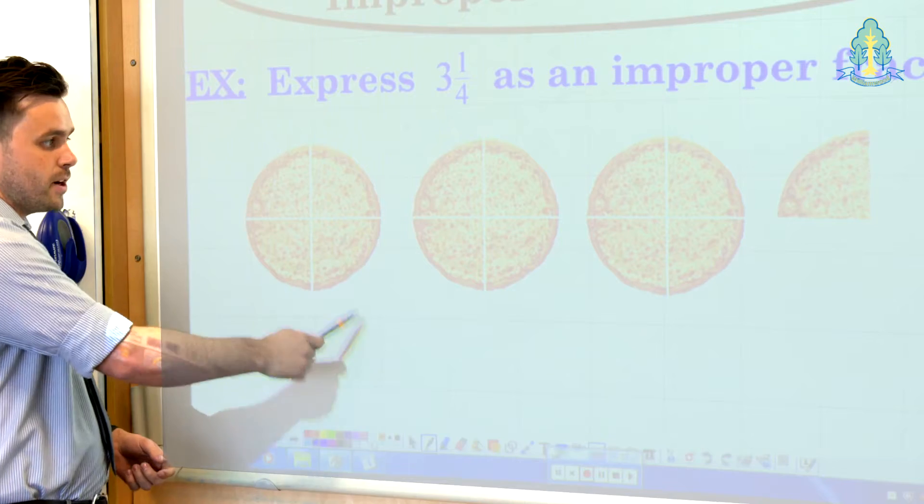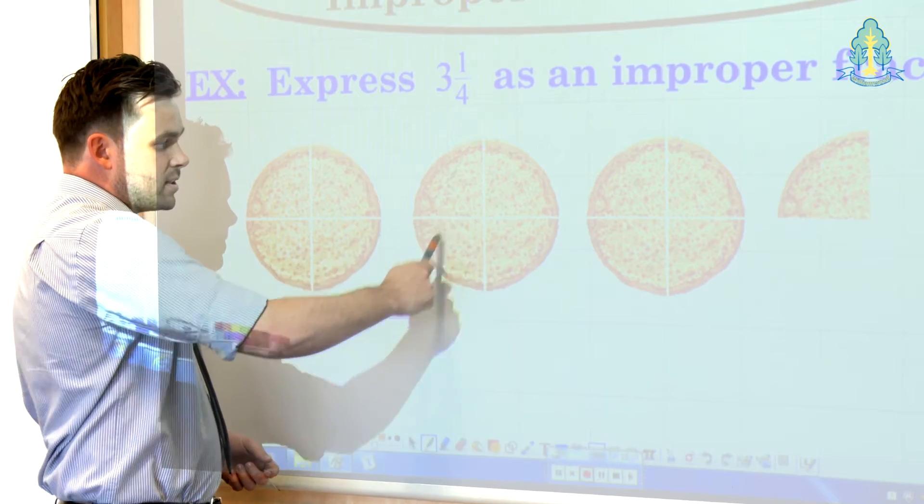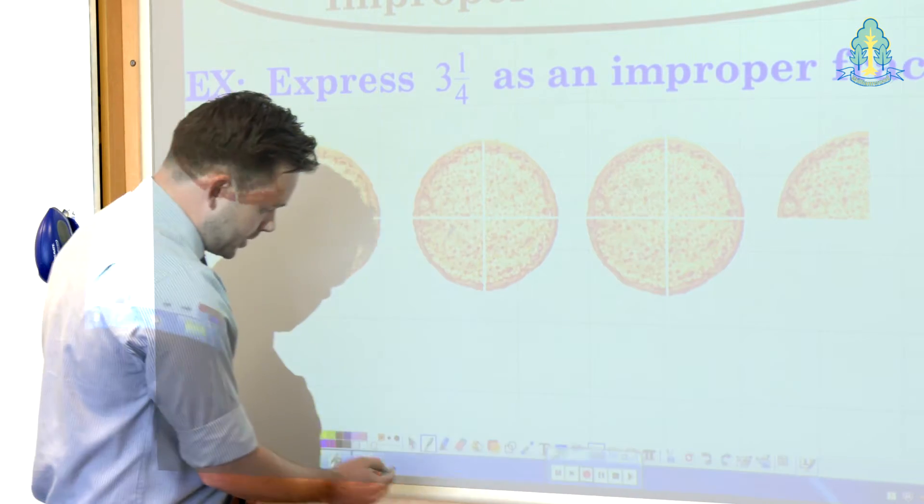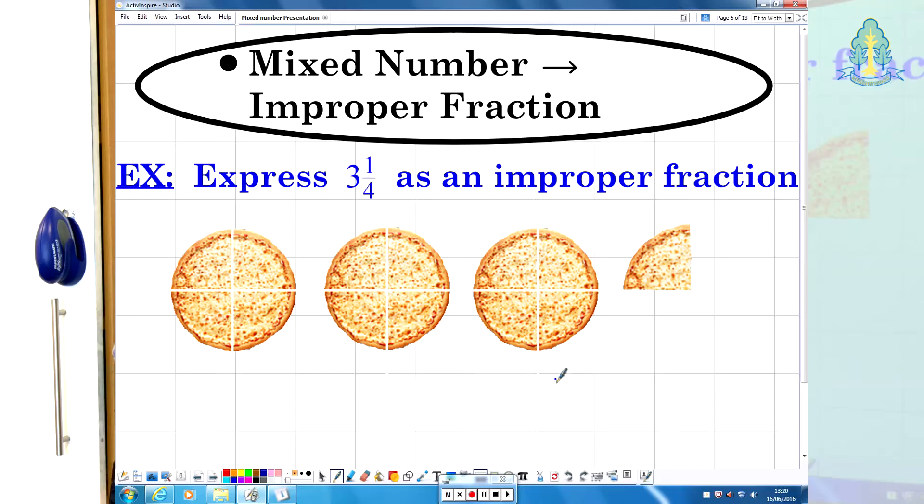We've got 1, 2, 3, 4 in the first whole number part, 5, 6, 7, 8, 9, 10, 11, 12 and 13 quarters for our top heavy fraction.